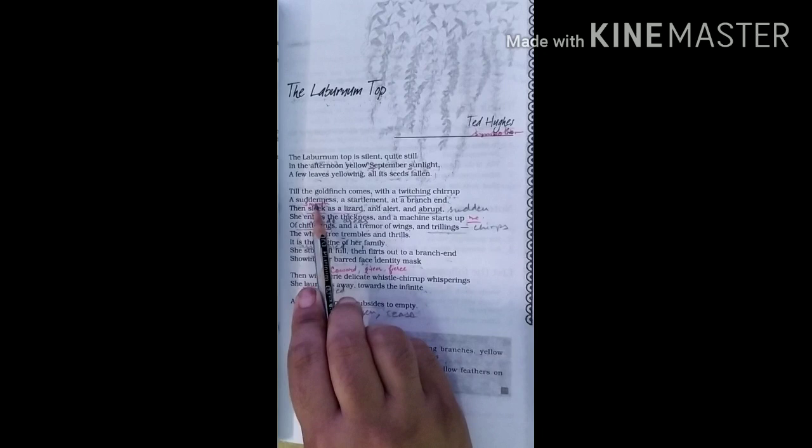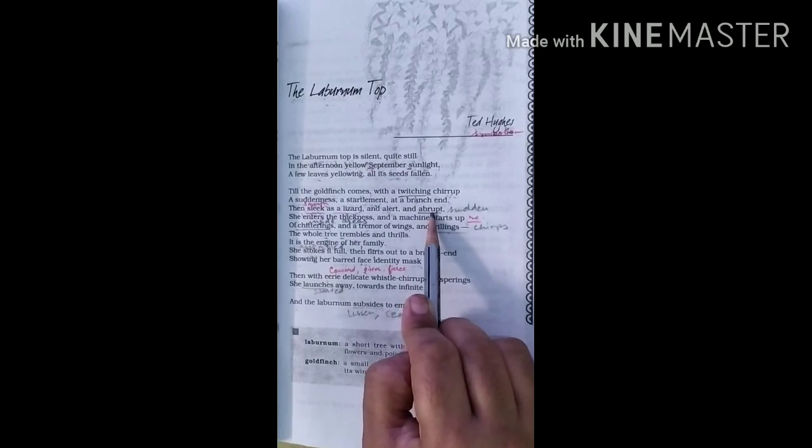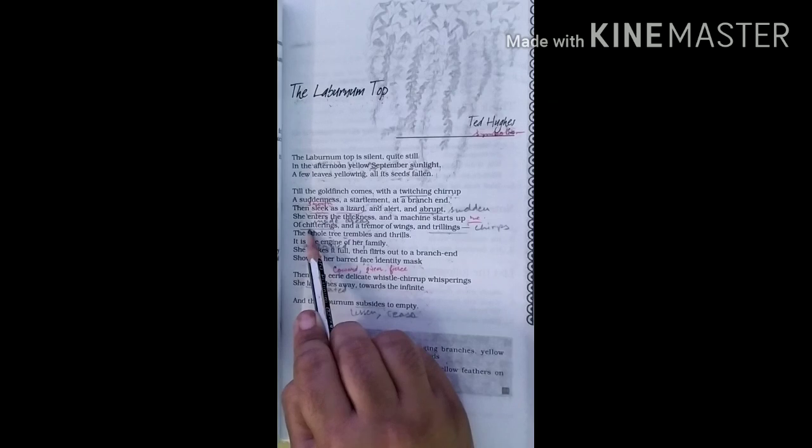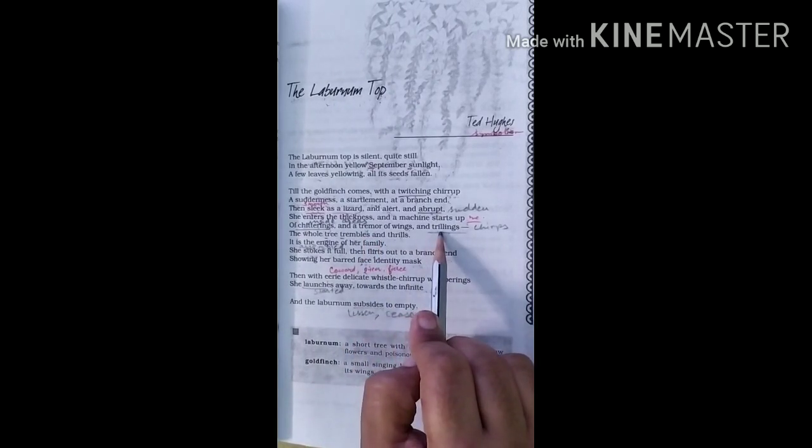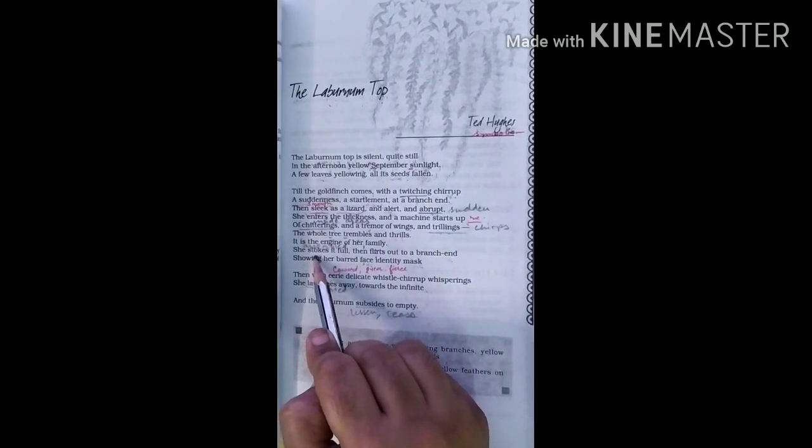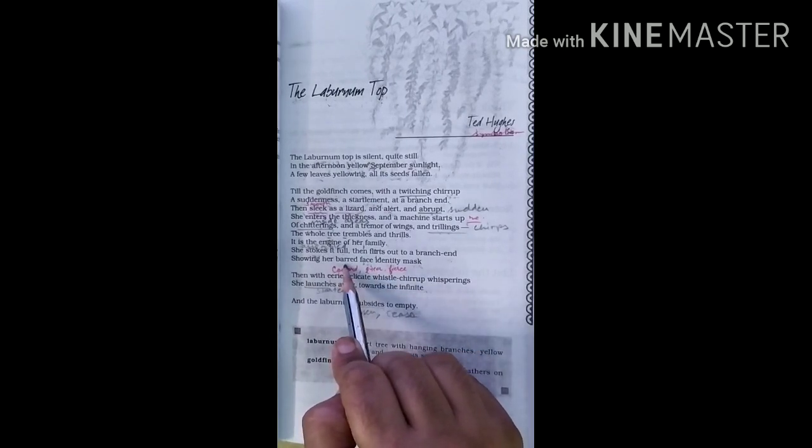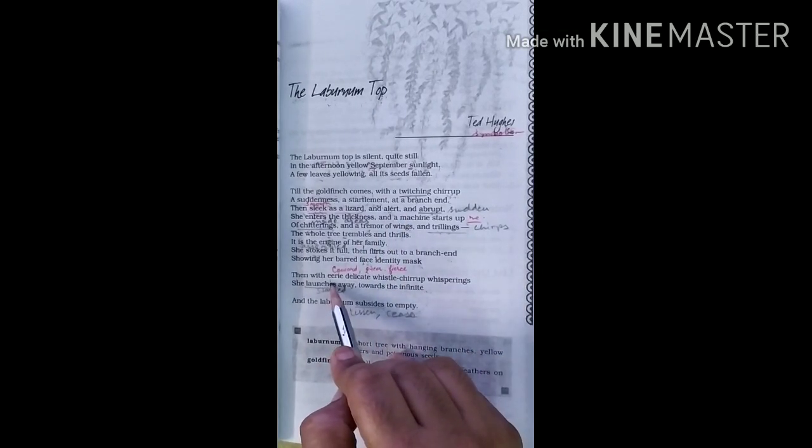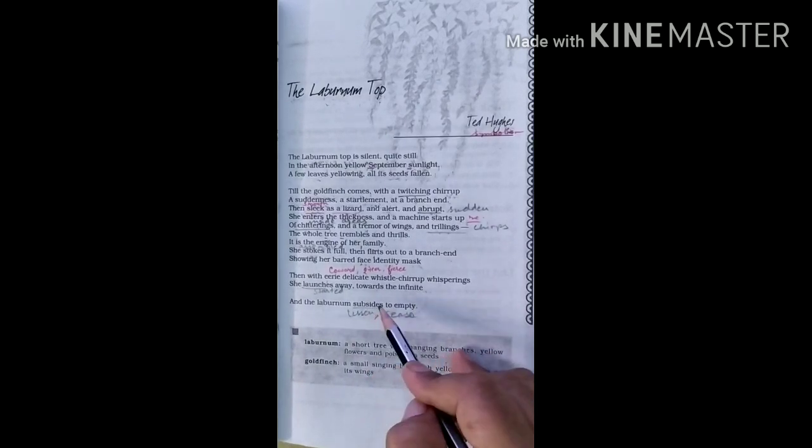Sleek means smooth. Alert means active. Abrupt means sudden or unexpected. Chitterings, singing sound of a bird. Tremor, shiver, shake. Trillings, singing repeatedly. Stokes means add fuel to the engine. Then flirts, moves briskly. Barred, barred means stripy. Then eerie, eerie means strange. Infinite here refers for the sky, infinite sky. Subsides means returns, lessen, or cease.